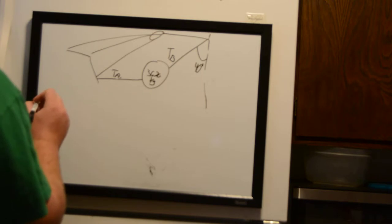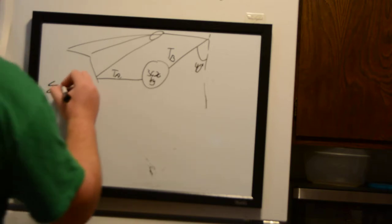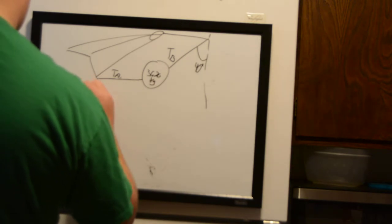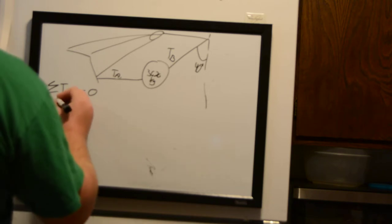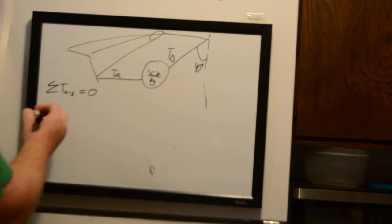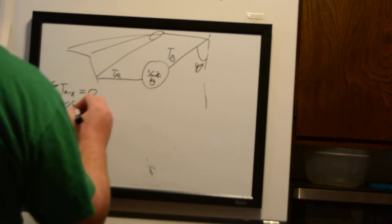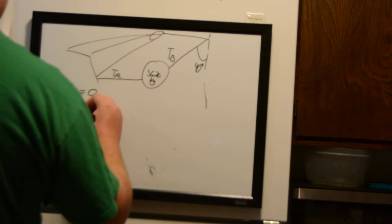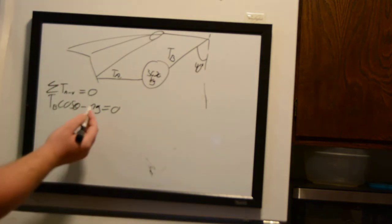To find Tension B, we use Newton's third law: the sum of all tensions in the x-direction is equal to zero. So the sum of the tensions gives us Tension B times the cosine of our angle — we use cosine because we're looking in the x-direction.